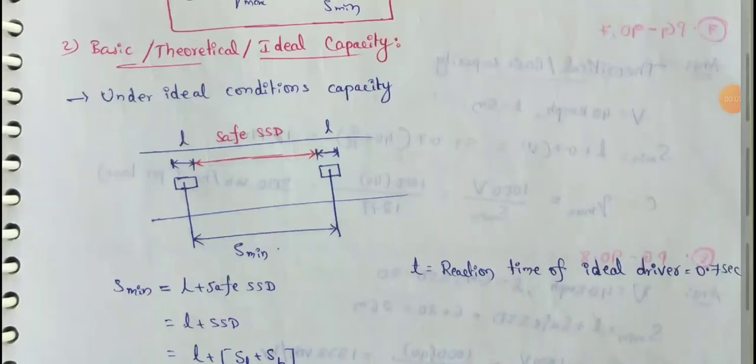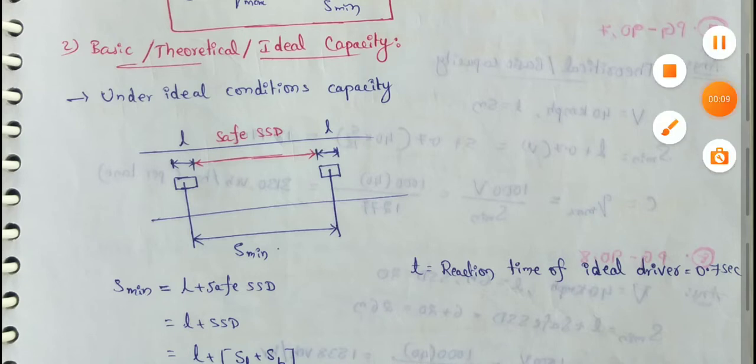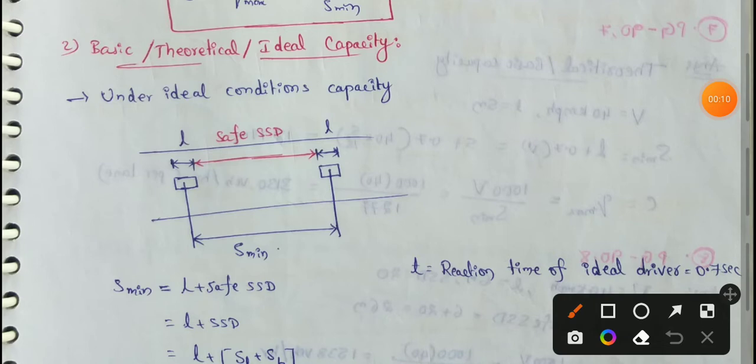Next topic: Basic Capacity. Traffic Capacity has two types. The first one is Practical Capacity and the second one is Basic Capacity. In this video, we will discuss Basic Capacity.